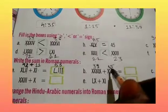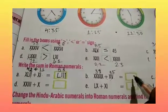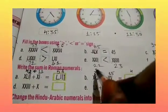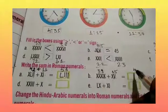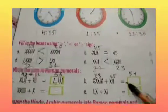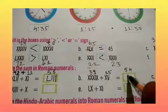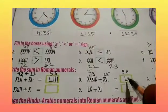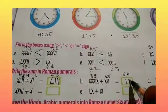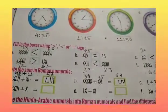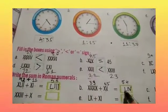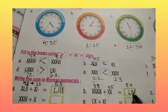So 39 plus 15 is 4, carry 1, 3 and 4 and 1 is 5. 54. So how will we write 54? We will write 50 and we will write 4. L and IV. This is 50 and this is 4. 54. Okay children?